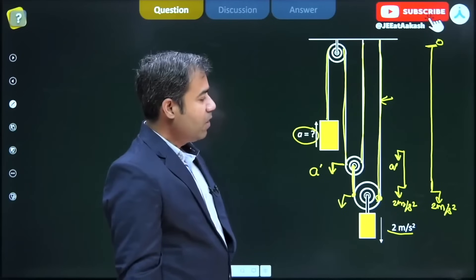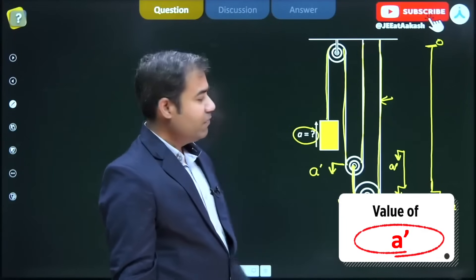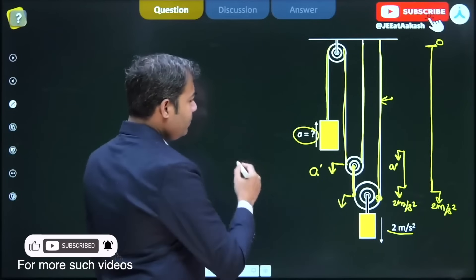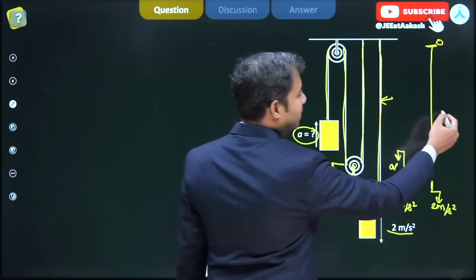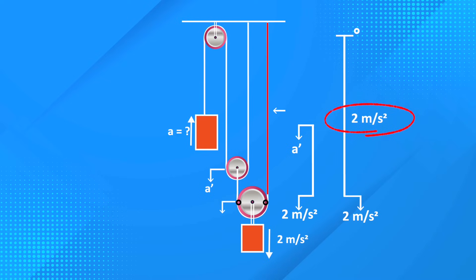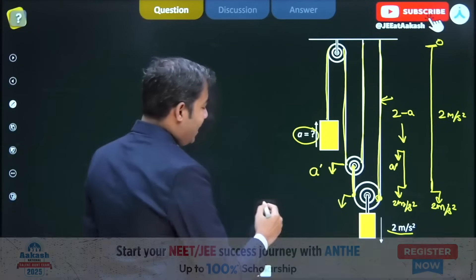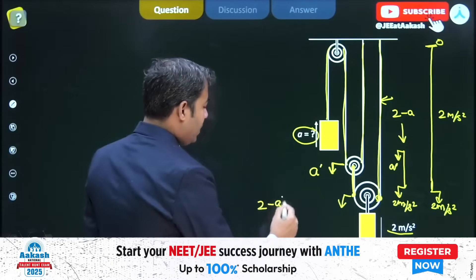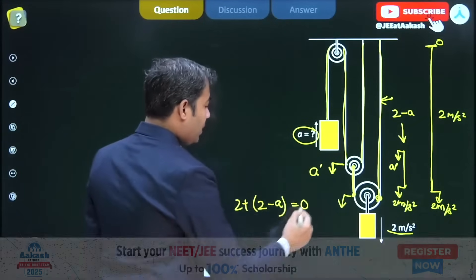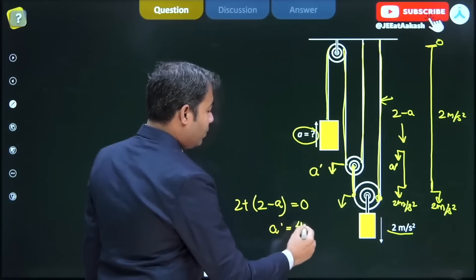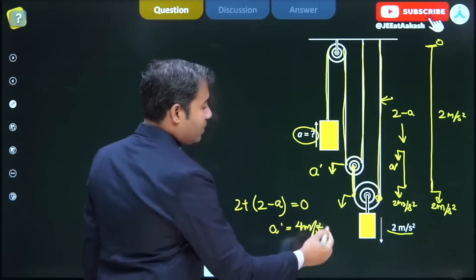We can find a' from here. When we express the change in length, it is 2 meters per second squared for this, whereas for this it is 2 minus a'. We add the total change and make it zero, which gives a' equals 4 meters per second squared.